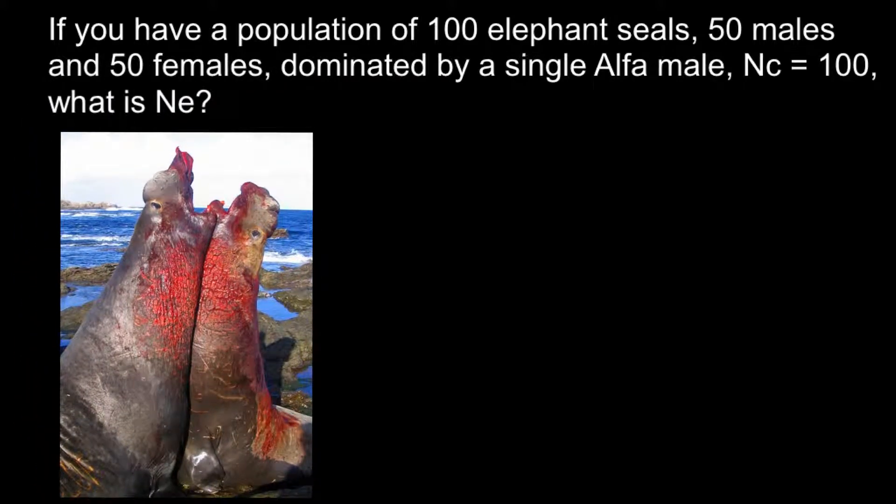And here on this picture you see elephant seals, here is the two males. And of course this male that is on the right here don't have much chance for breeding, because this male on the left is much larger and heavier, and we call such animal alpha male, that do most of the breeding.